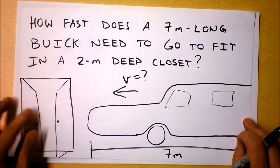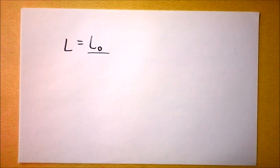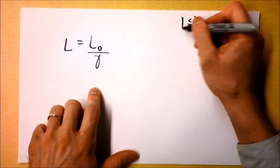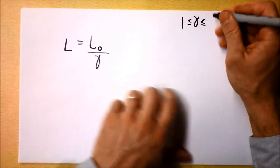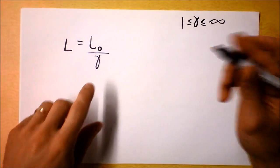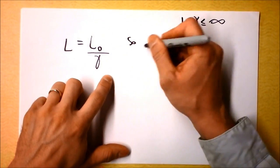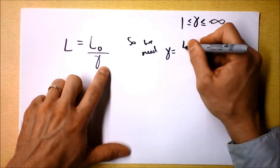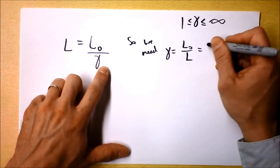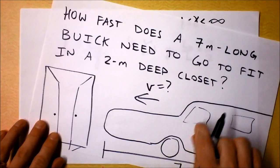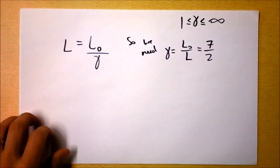Because you go up to a Buick and you're like, that is a Buick. So then we need to divide by gamma. And remember, gamma is this thing that talks about how relativistic stuff is, and it is between one and infinity. The more relativistic your velocity is, the bigger your gamma is. So we need gamma to be L-naught over L, which is 7 halves. We just need to get a 7 halves gamma to fit this Buick in that closet.